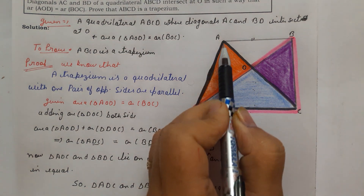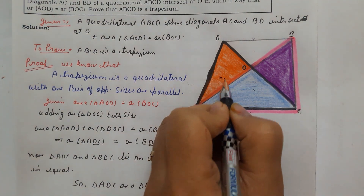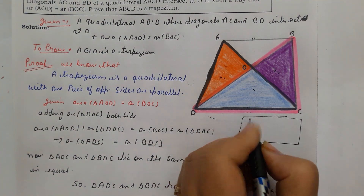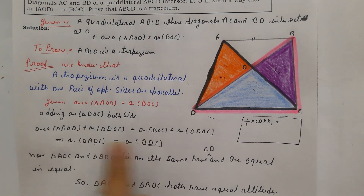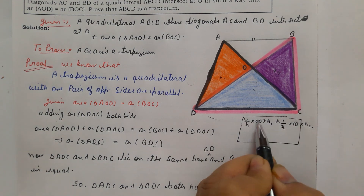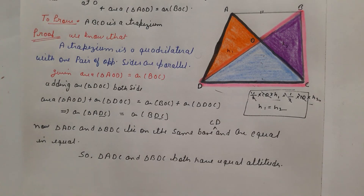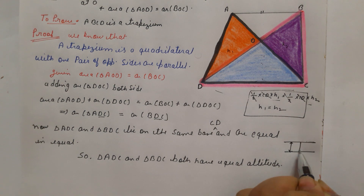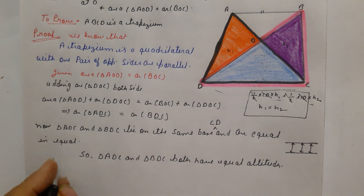Let the altitudes of triangles ADC and BDC be H1 and H2 respectively. Using the area formula: area equals half into base into height. Since the base DC is common and the areas are equal, we get H1 equals H2, confirming the altitudes are equal.